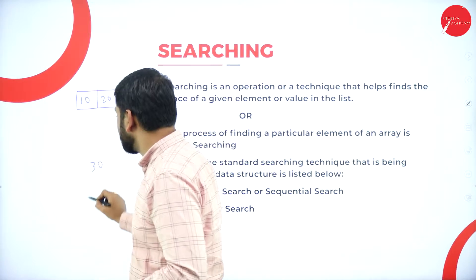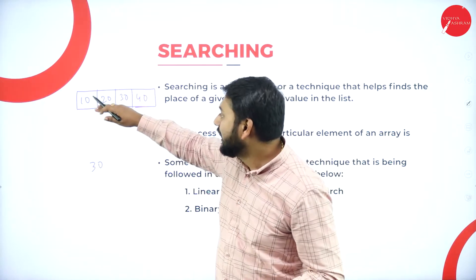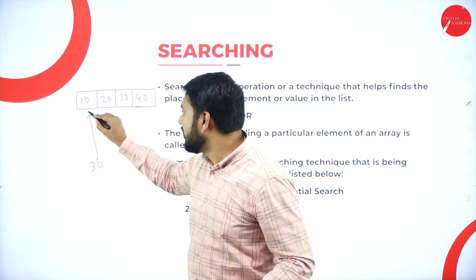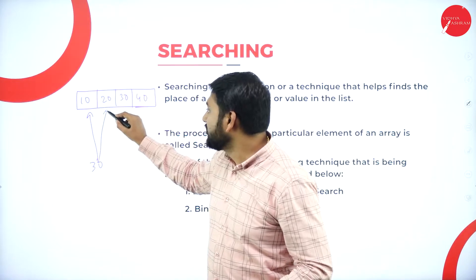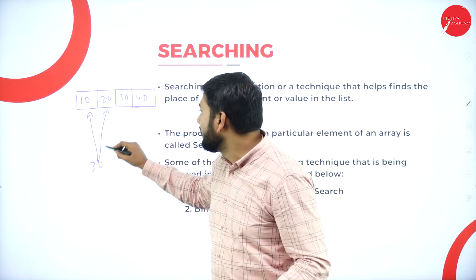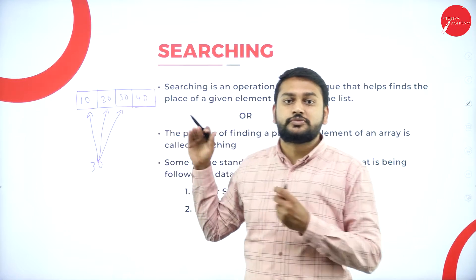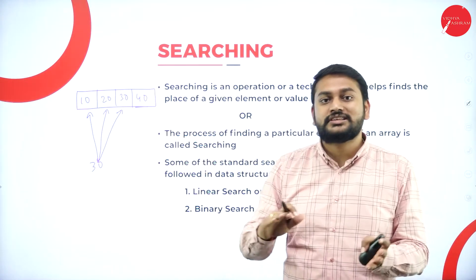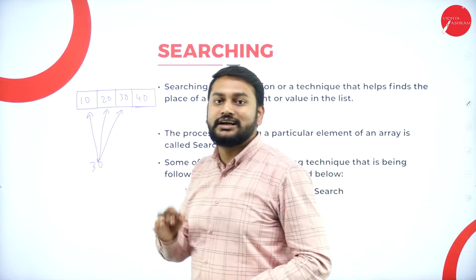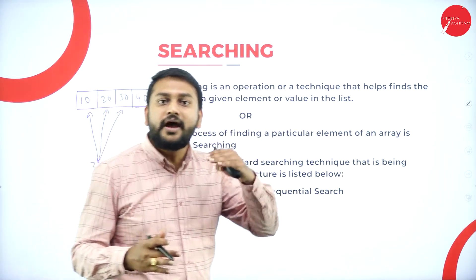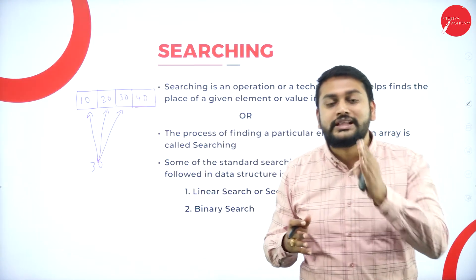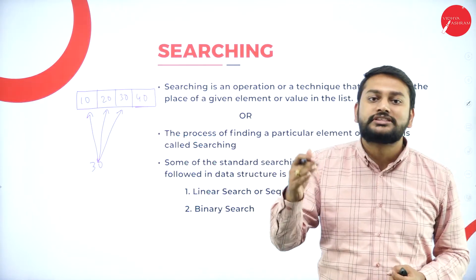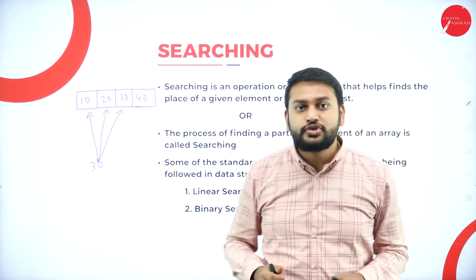Say for example, I need to search for 30 — do I have 30 in this array? I will compare 30 with the first element — no. Then the second — no. Then the third — yes, it's matching! Element found. This kind of search, where you go one by one, is what I call a linear search or sequential search.